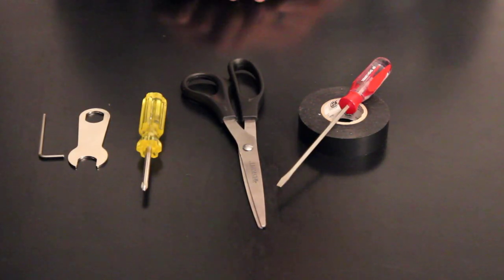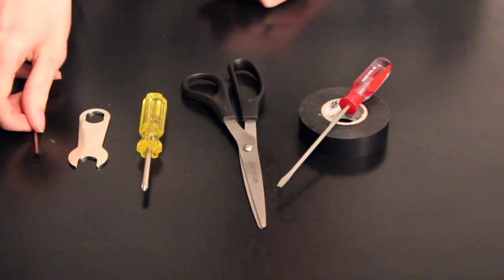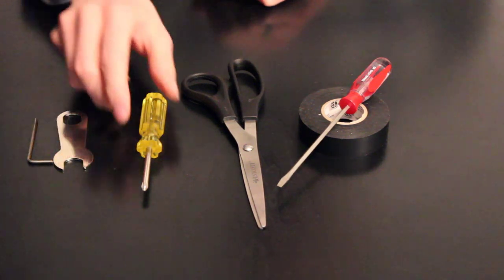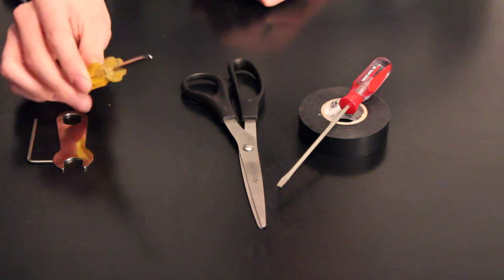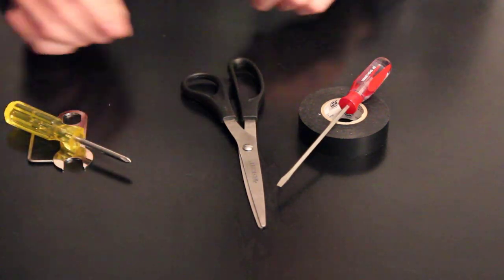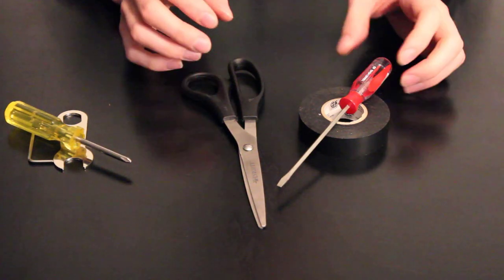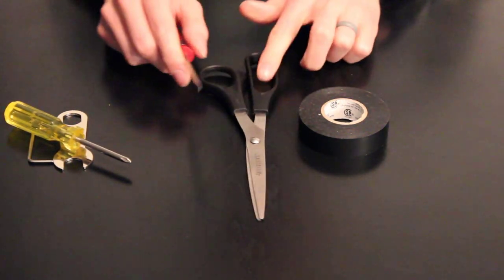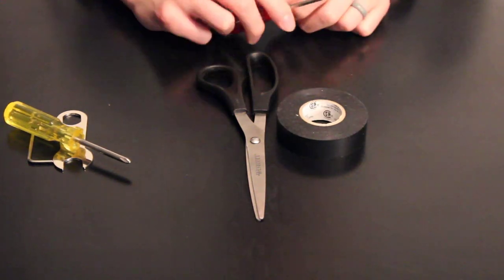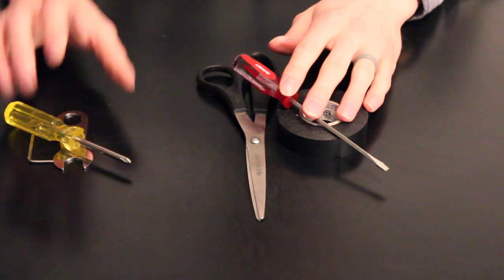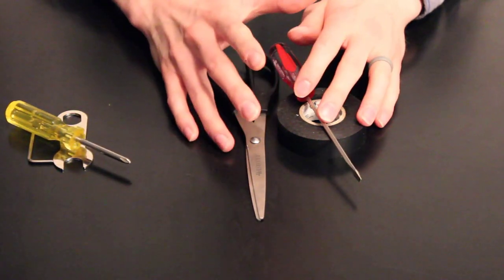Celestron does include everything that you need to install the motorized focuser. So that includes the hex wrench, the normal wrench, and the Phillips head screwdriver. So this is absolutely all that's required to install it. Optional, and I think it helps, is to get a small flathead screwdriver, some scissors, and some electric tape. And that helps in removing the stock rubber focuser cover.